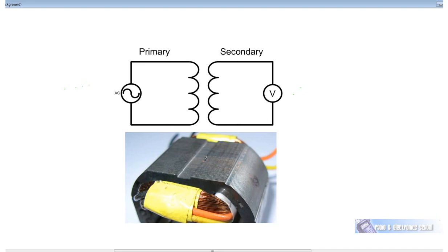At VHF we wouldn't use air or laminated iron — we'd use a ferrite core. There's also powdered iron, which is iron powdered and moulded into a core. But the best core for VHF and above is ferrite material.